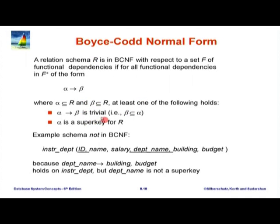For all such dependencies, either it is trivial or alpha is a super key for R. In our inst-dept example, department name determined building and also budget. We had this functional dependency. Here is another example of inference: we know department name determines building, we know department name determines budget. We can infer automatically that department name determines building and budget, because if you have two tuples with the same department name, they will have the same building and the same budget.